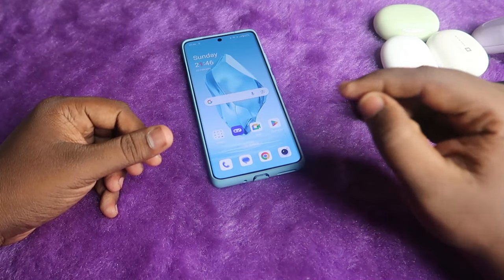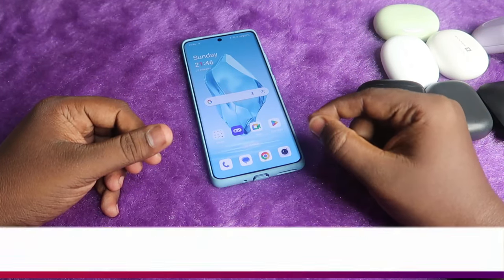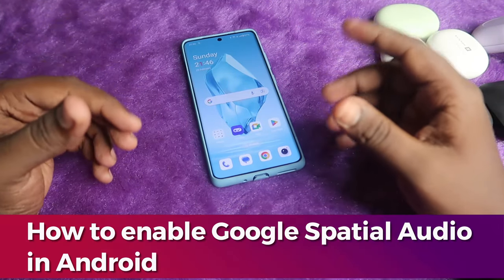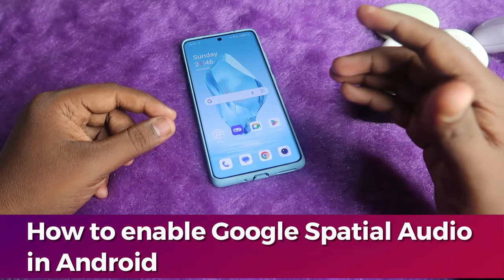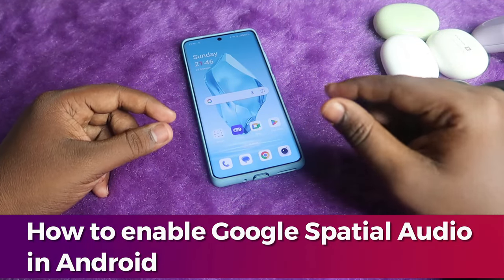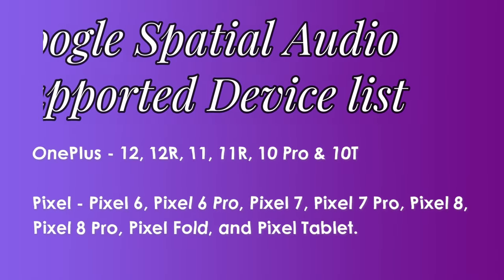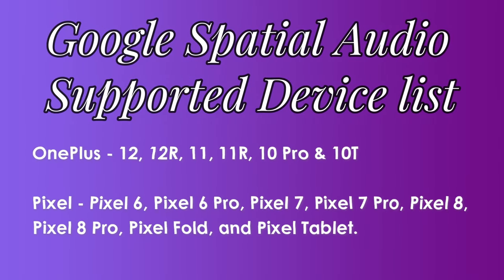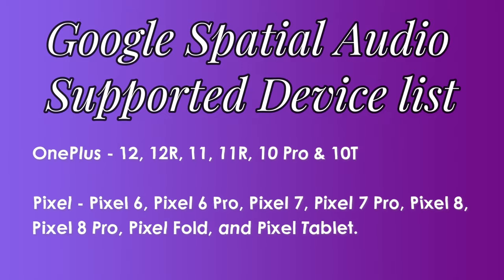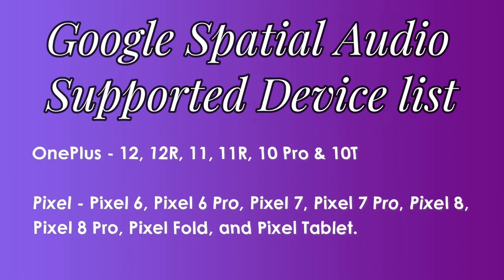In this video, let me share how to turn on Google Spatial Audio on an Android smartphone. Google Spatial Audio was introduced in August 2023 with Android 13, initially limited to Pixel devices only. After that, it became available for OnePlus devices — last year the OnePlus 11 and 11R, and this year the recently launched OnePlus 12 and 12R are supported.